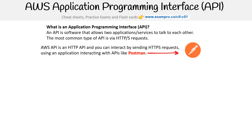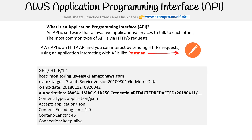The AWS API is actually an HTTP API, and you can interact with it by sending HTTP requests using an application interacting with APIs like Postman. Here's an example of what a request would look like that would be sent out.